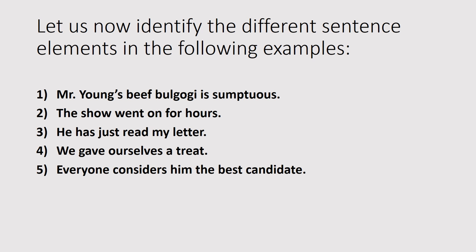Number four: 'We gave ourselves a treat.' 'We' is the subject, 'gave' is the predicate. Gave what? 'A treat' — that's your DO. To whom or for whom? 'Ourselves' — functioning as indirect object. Number five: 'Everyone considers him the best candidate.' 'Everyone' is your subject, 'considers' is your predicate. Considers who? 'Him' is your direct object. Following 'him,' you have a complement — something that describes the DO. If it modifies your DO, it's called an object complement.